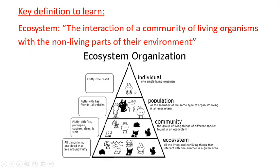So Fluffy the rabbit is the individual; all her rabbit friends together make the population of rabbits. That rabbit with all the other living things within that habitat — in this case a woodland — is the community. But then all the non-living things being interacted with gives you your ecosystem.